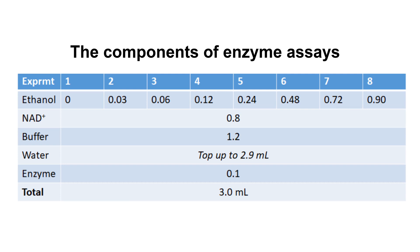Shown in this table are the components of the enzyme assays. We have altogether eight tubes from tube one to tube eight. Tube one is the blank sample — it is used to remove all the background noise from the experiment.